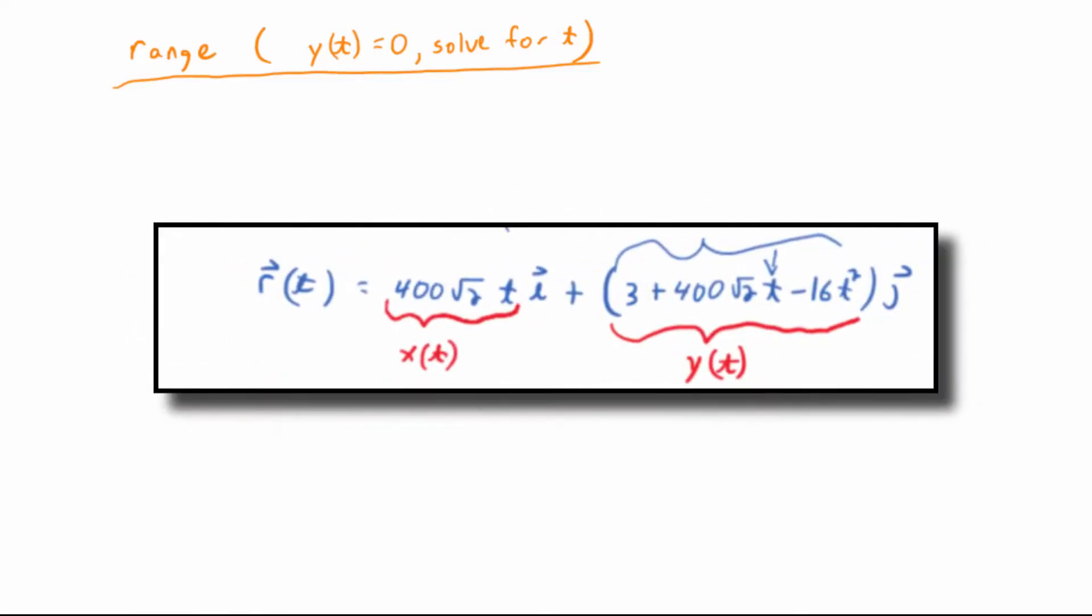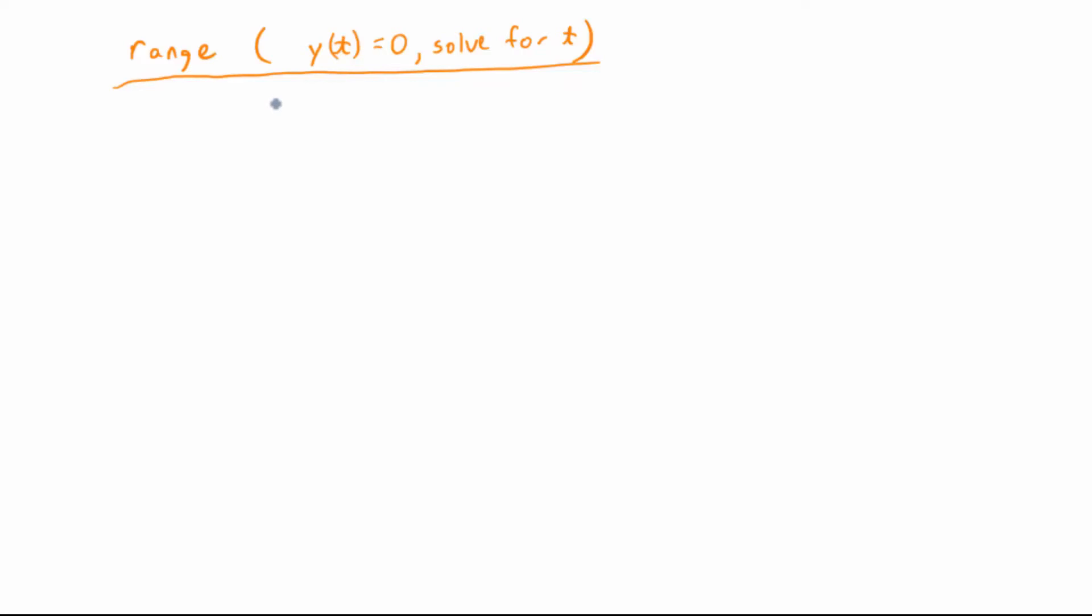So 3 plus 400 radical 2t. Let me say that again. 3 plus 400 radical 2t minus 16t squared. So 3 plus 400 radical 2t minus 16t squared. And we're going to set that equal to zero and solve for t.